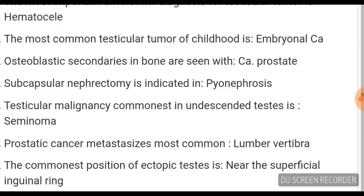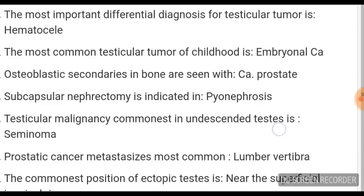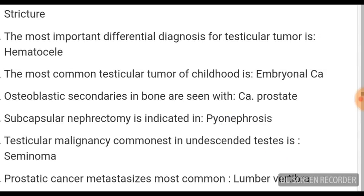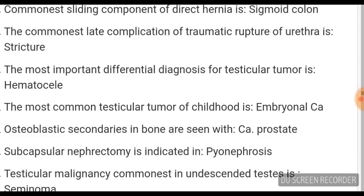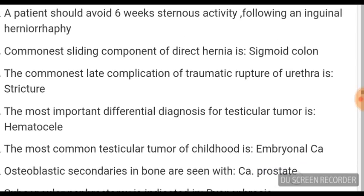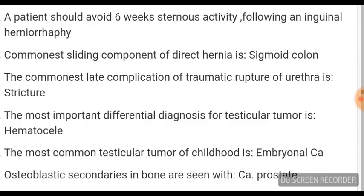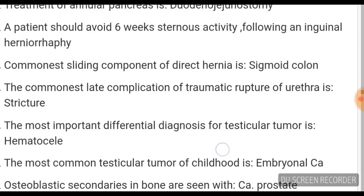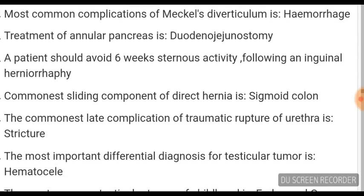Testicular malignancy most common in undescended testes is seminoma. Subcapsular nephrectomy is indicated in pyonephrosis. Osteoblastic secondaries in bone are seen in carcinoma of the prostate. The most common testicular tumour of childhood is embryonal carcinoma. The most important differential diagnosis of testicular tumour is haematocele. The commonest late complication of traumatic rupture of the urethra is stricture.